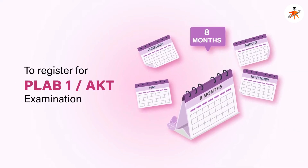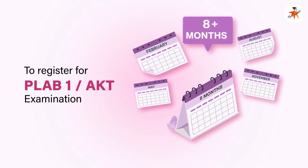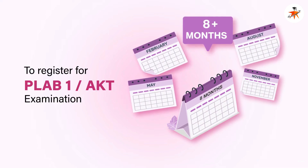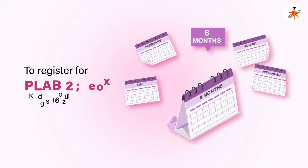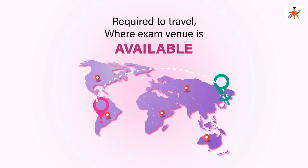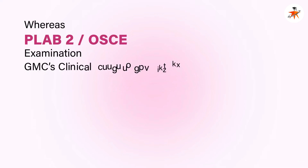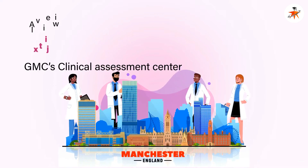To register for PLAB 1 or AKT exam, you may be required to wait for about eight months or more, although it is conducted in the months of February, May, August, and November. If the exam venue is not available in your country, you will be required to travel to a country where the exam venue is available. PLAB 2 or CPSA only takes place in the GMC's Clinical Assessment Centre in Manchester for IMGs.